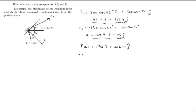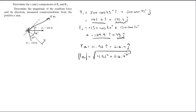Now we gotta convert this into polar form. To get the magnitude of the resultant force, we have to do the square root of the x and the y component squared. When you do this you get that the magnitude is 216.7 newtons.